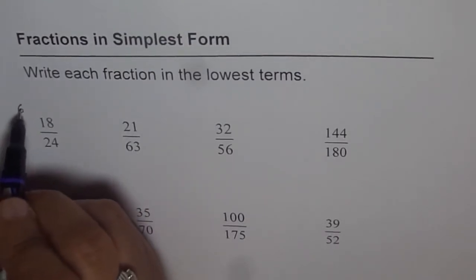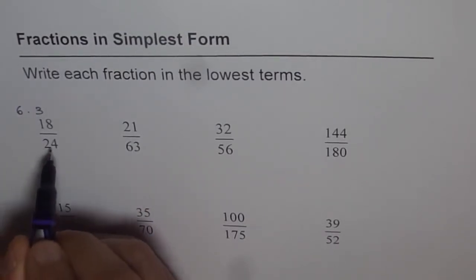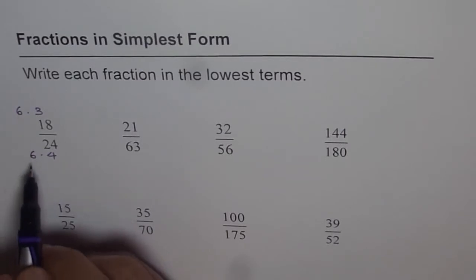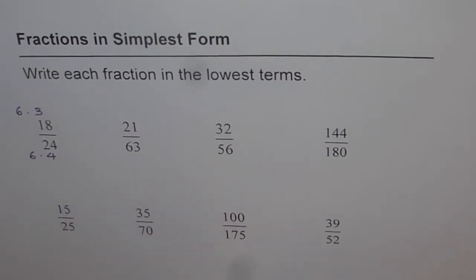So 18 is 6 times 3 and 24 can be written as 6 times 4. As you can see, they have common factor of 6. So we can cancel this off.